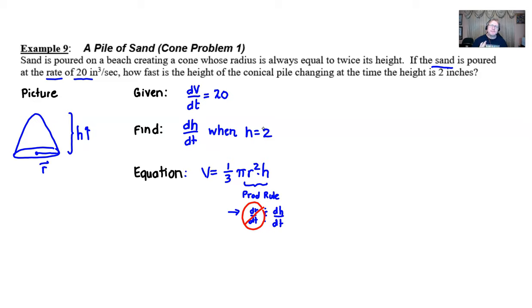You have to recognize that in a lot of these cone problems we have to fix that. There fortunately is a bit of language in the problem, the language that says radius is always twice the height, that we are going to use to our advantage. Maybe we put that information over here: r equals two times h.